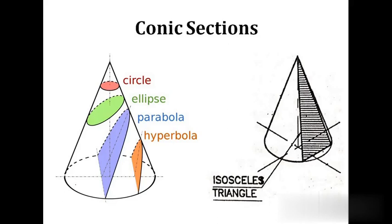Basically there are five types of conic sections — five different shapes that can be obtained from a cone by cutting it using a section plane. They are circle, ellipse, parabola, hyperbola, and isosceles triangle. Now let us discuss them one by one.